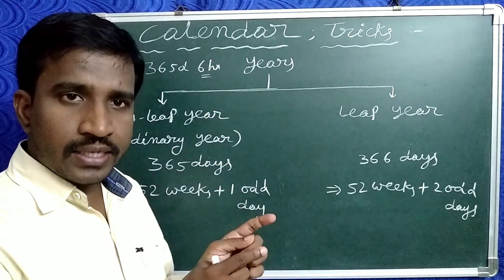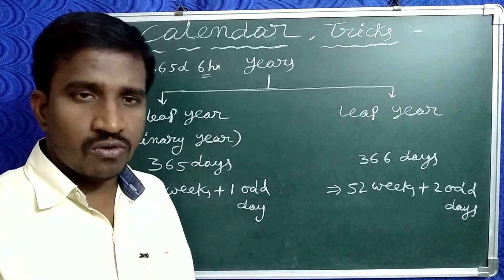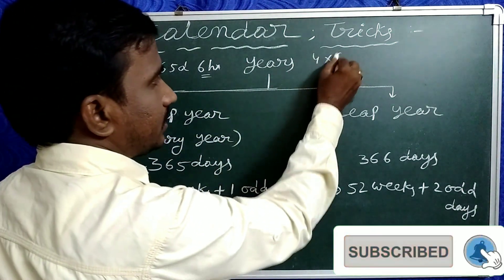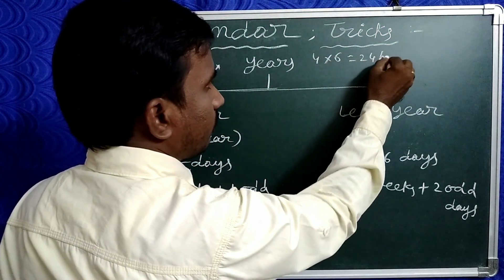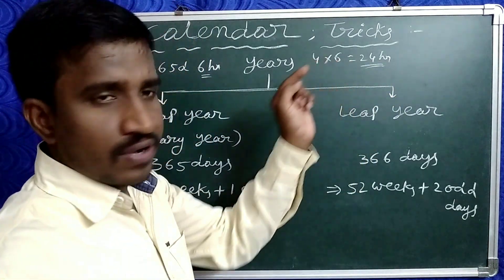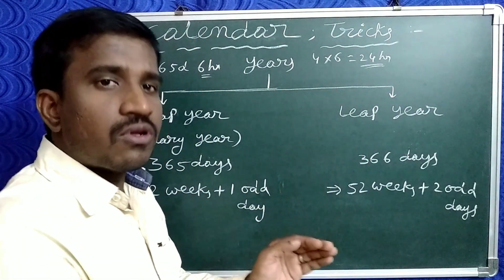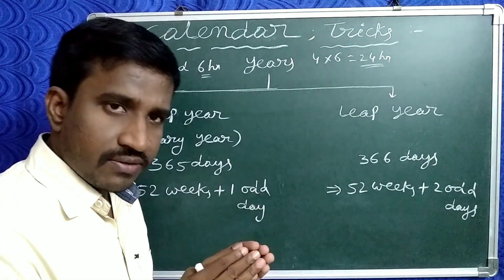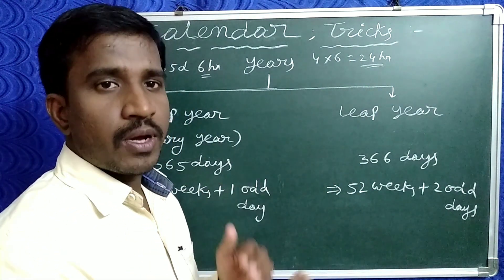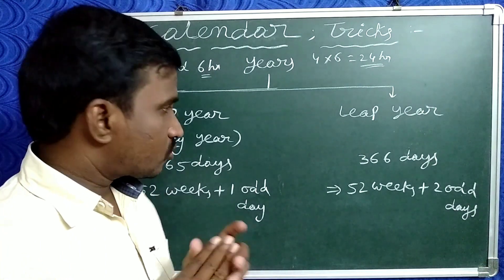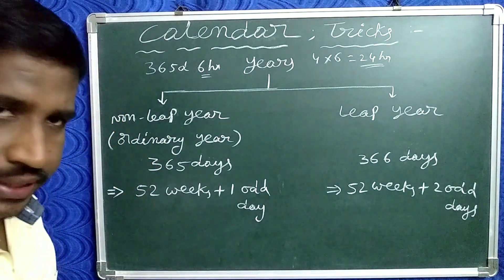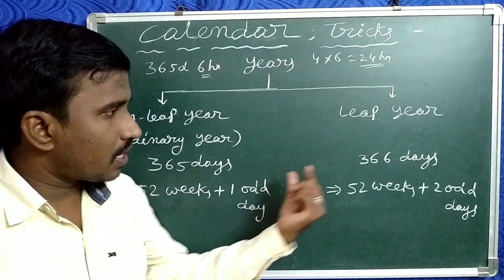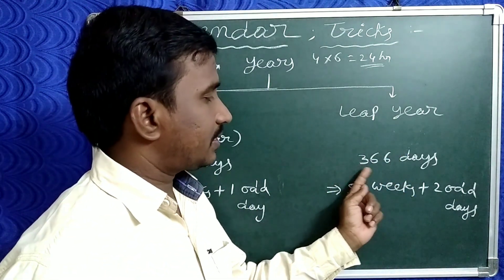After 4 years, those 6 hours accumulate: 4 into 6 is equal to 24 hours. That 24 hours is one day, and that is why every four years we have a leap year. So a non-leap year contains 365 days and a leap year contains 366 days.